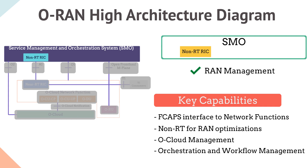The SMO performs these functionalities through four key interfaces to the ORAN elements, shown in the diagram: the A1 interface between the non-RT RIC in the SMO and the near-RT RIC for RAN optimization; and the O1 interface between the SMO and the ORAN network functions for FCAPS support.